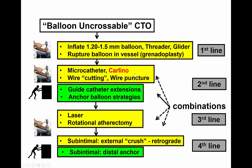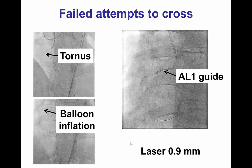The algorithm goes on to using different microcatheters and various guide support techniques, then laser, and if possible, exchange for a rotofloppy wire rotational atherectomy. If everything else fails, one can do subintimal techniques to compress the plaque from the outside.